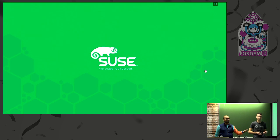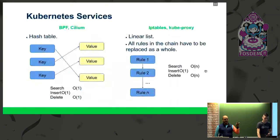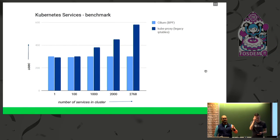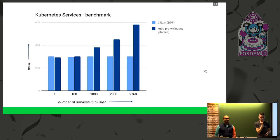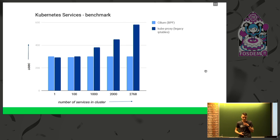Also in the case of kube-proxy, kube-proxy uses IP tables and we have seen a degradation in performance when there are a lot of IP table rules. Even by including IP sets or going with a newer version of IP tables like NF tables, we have seen a degradation in performance. The discussion was cut off as the room needed to be vacated.